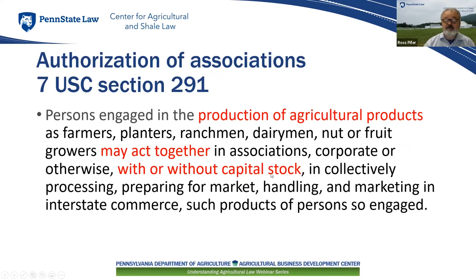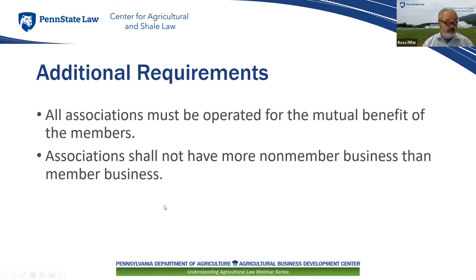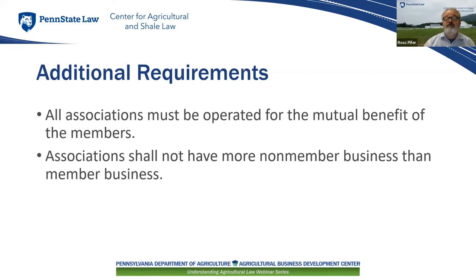Capper-Volstead also requires that the association be operated for the mutual benefit of the members, and that the association can't have more non-member business than member business. This goes back to the user-benefit principle — the cooperative is designed to be used by cooperative members, and this requirement is built into Capper-Volstead.